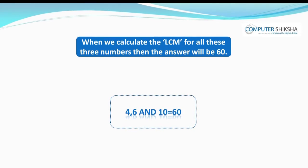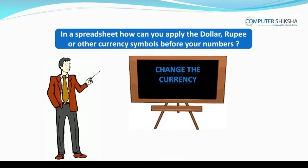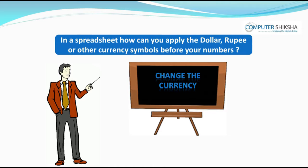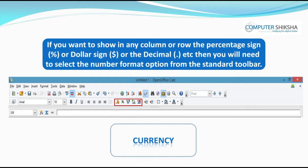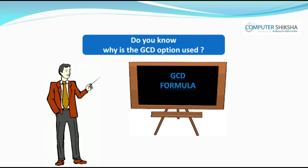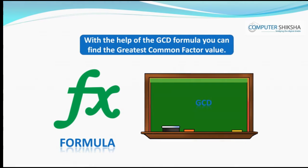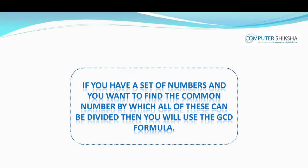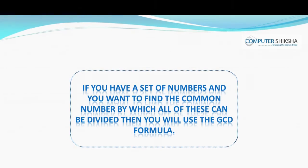To find the lowest common multiple value from given numbers like 4, 6, and 10, you use the LCM formula in a spreadsheet. When you calculate the LCM for all three numbers, the answer will be 60. To apply currency symbols like dollar or rupee before your numbers, select the number format option from the standard toolbar. With the GCD formula, you can find the greatest common factor value — the common number by which all given numbers can be divided.